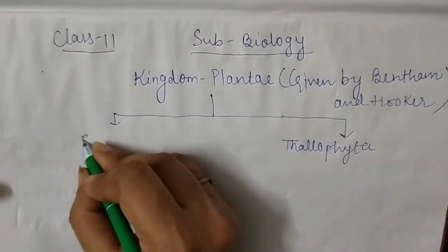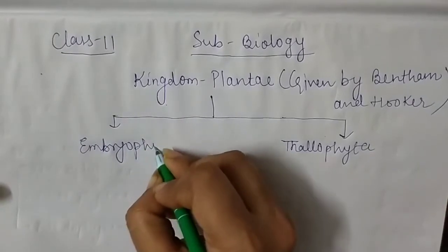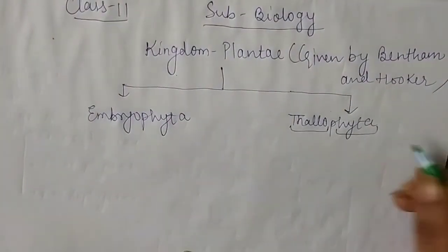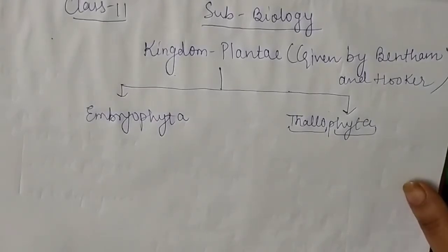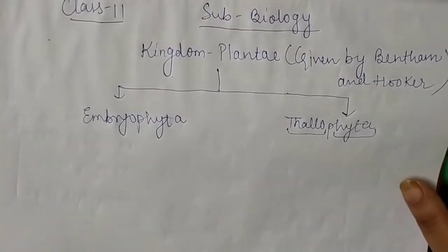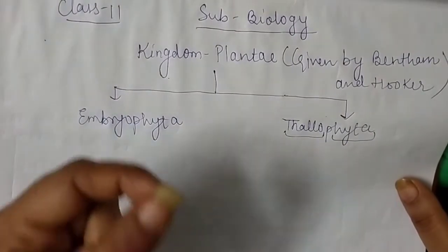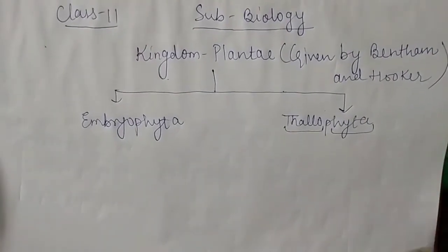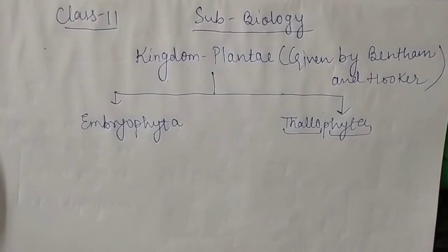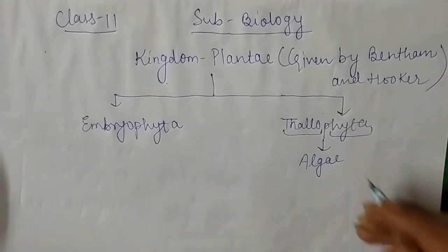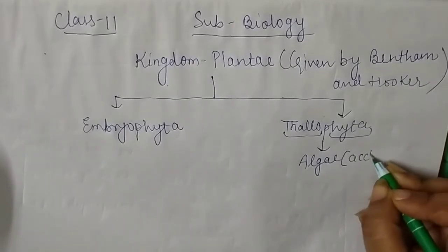The first part is Thallophyta and the other is Embryophyta. 'Thallo' means thallus and 'phyta' means plants — these plants have a thallus-like body organization. Thallus means the undifferentiated body, the plant body which does not have roots, stem, and leaf. Plants which have thallus-like organization are called Thallophyta. In this category, algae are included, and algae are divided according to their pigments.